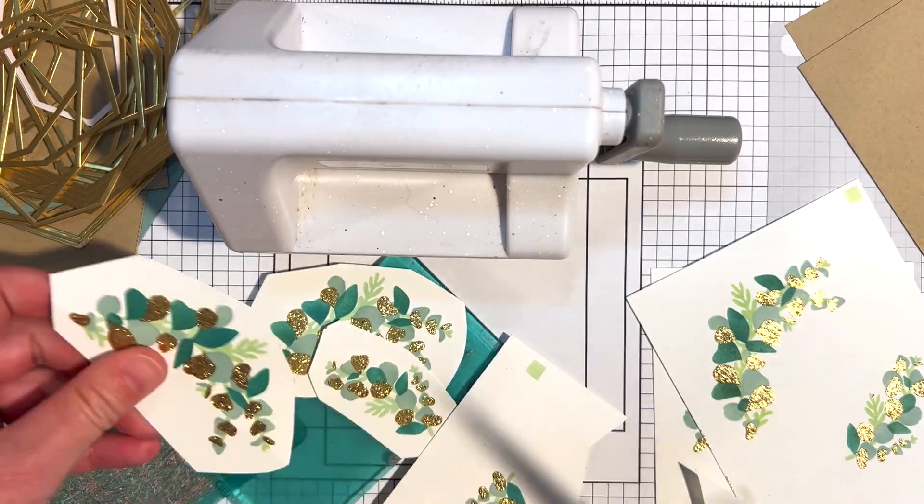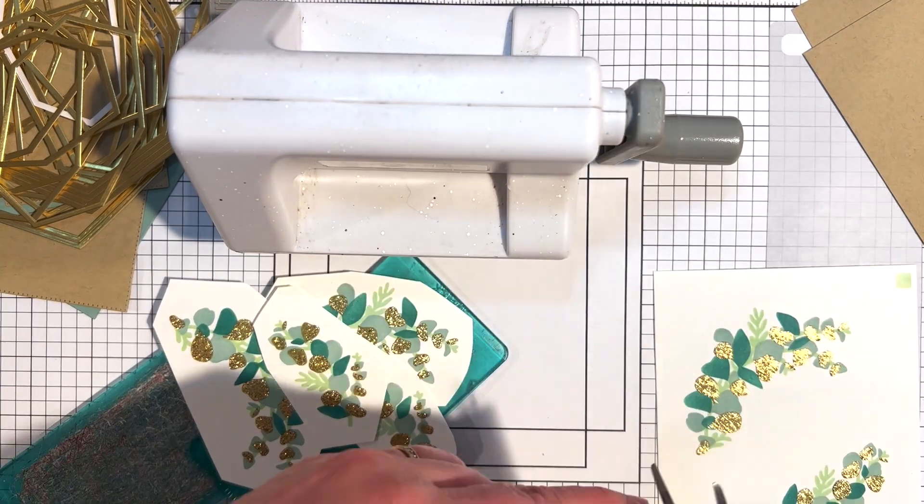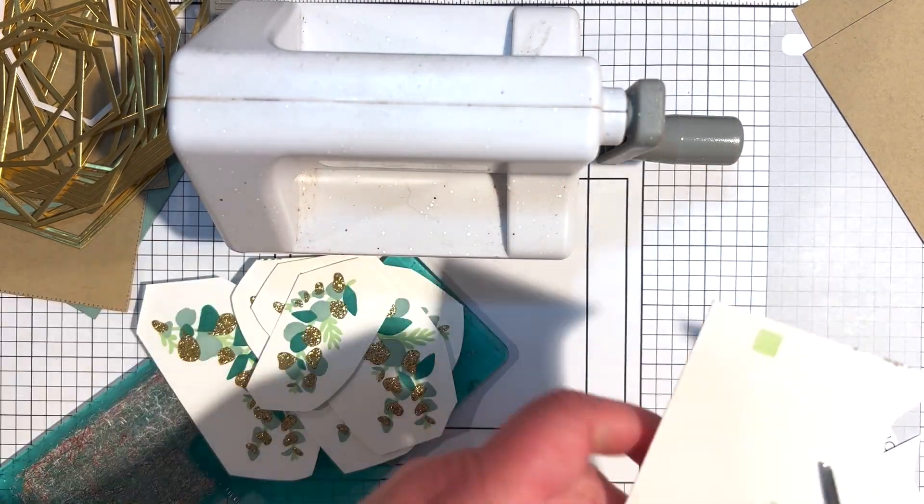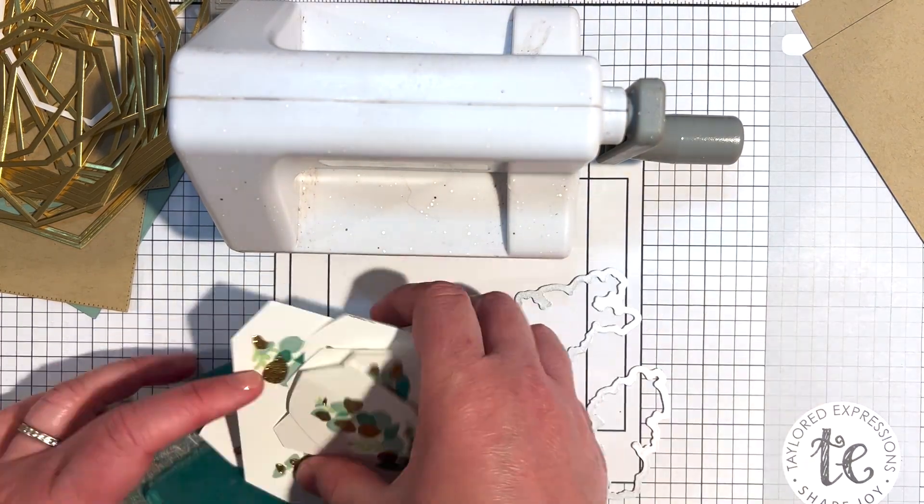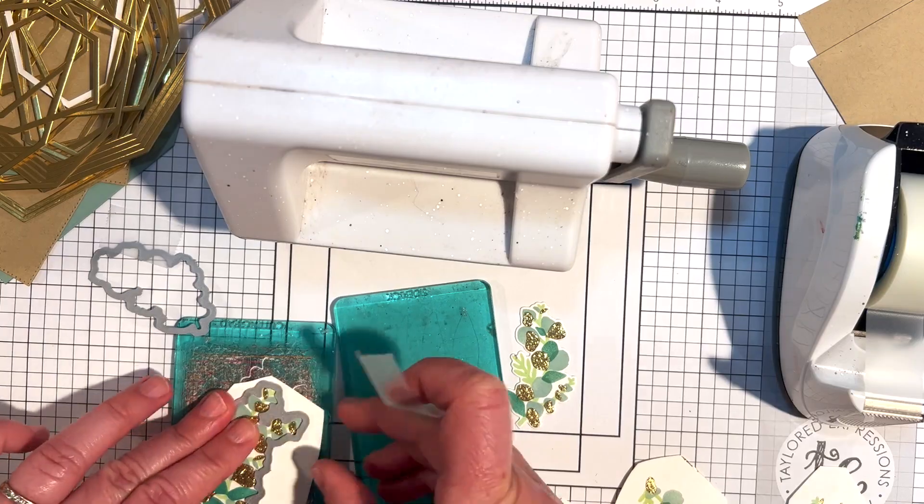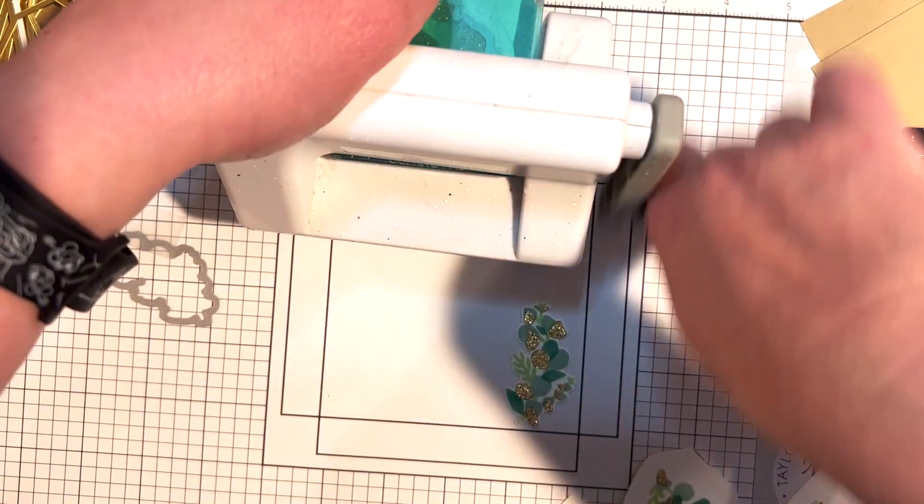My stenciled eucalyptus panels are dry. I actually stenciled four of these to use for my projects, and now I'm going to cut them out with the coordinating dies. With my sidekick machine, I cut the eucalyptus pieces apart with scissors so they'll fit through my sidekick machine. I arranged the die over the images and held the dies in place with removable tape to cut them out.